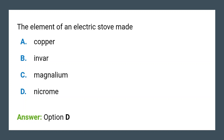Question number one: What is the element of an electric stove made up of? The element of an electric stove is made up of nichrome. The correct answer is option D.